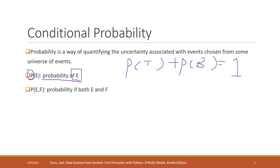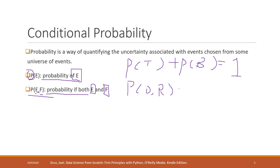P(E, F) denotes the probability that both events E and F happen together. For example, consider the probability that we are going to have online class next week, and also the probability that next week we are going to have rain. P(E, F) is the probability that both of those events happen.